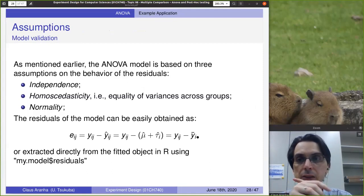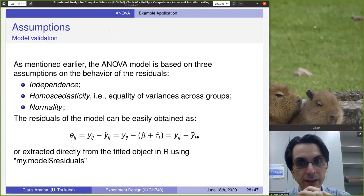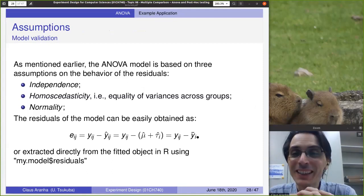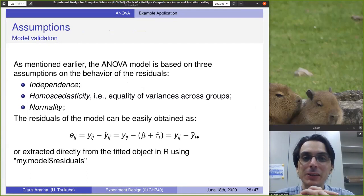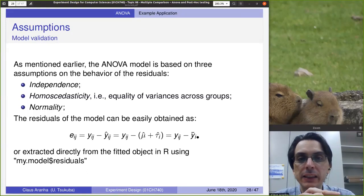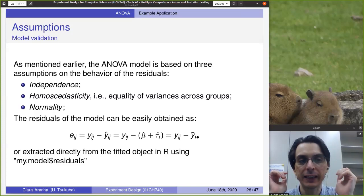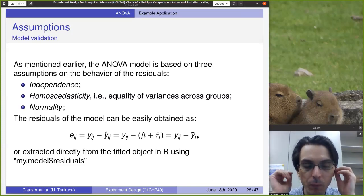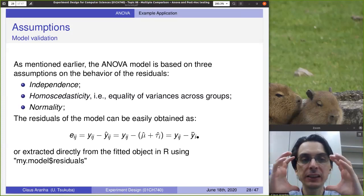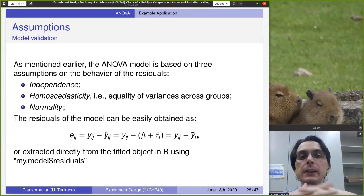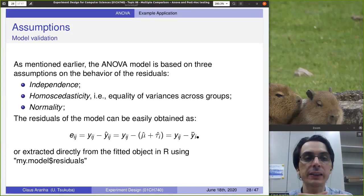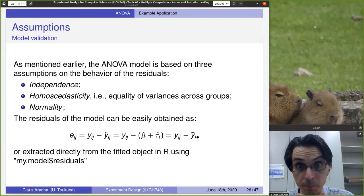The second, and maybe the most important, is homoscedasticity — which means the equality of variances across groups. The variances don't need to be exactly the same across samples, but they need to be similar enough that we can say that all of them came from the same population.